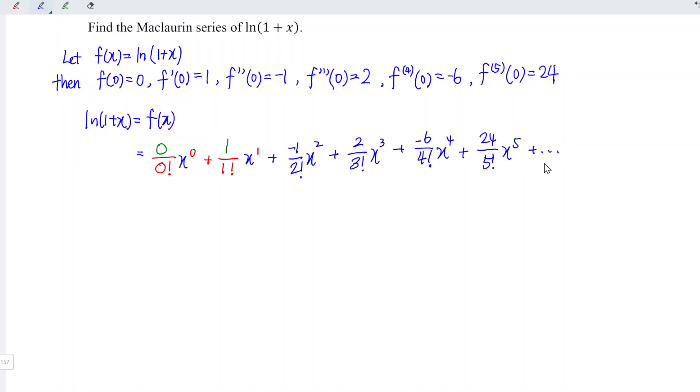24 divided by 5 factorial x to the power of 5, and so on. Let's evaluate and obtain the series. 0 times anything is 0. This is 1 divided by 1 times x. So x plus, minus times minus 1 over 2 x squared plus 2 over 3 factorial. 3 factorial is 6, so 2 divided by 6 is 1 over 3.